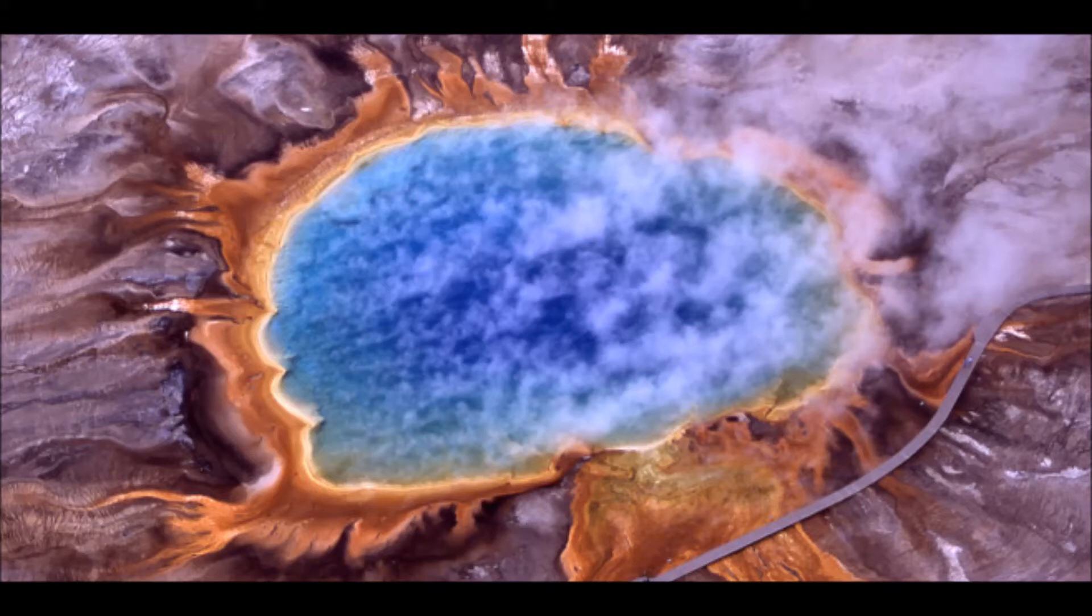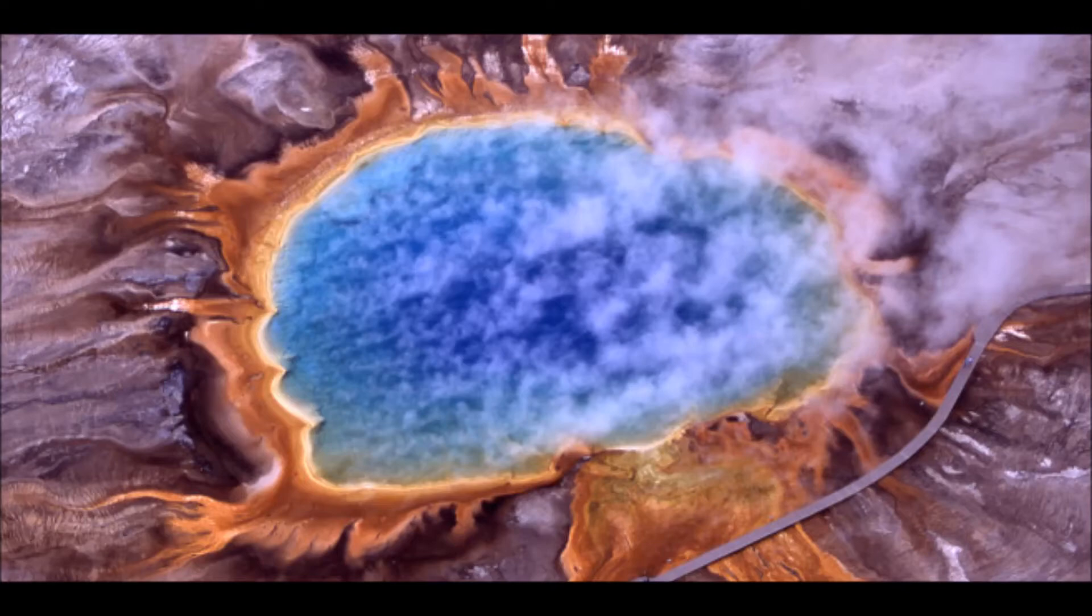To lead their examination, Nelson and Grant dissected seismic information from Earthscope's U.S. array, which has stations all over North America. As per a Nature official statement, taking a gander at a mainland scale, they recognized a long, thin, slanting zone inside the mantle through which seismic waves travel all the more gradually, and which may demonstrate the nearness of uncommonly warm material. You can see an outline of this zone underneath, courtesy of Nature Geoscience.